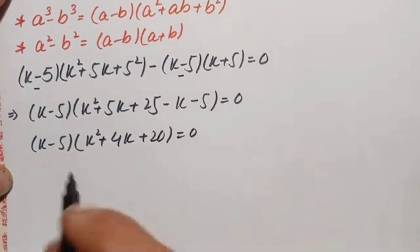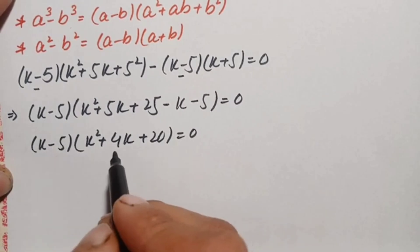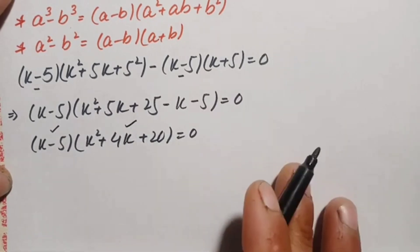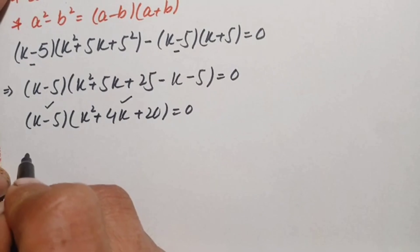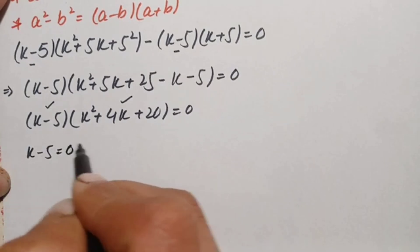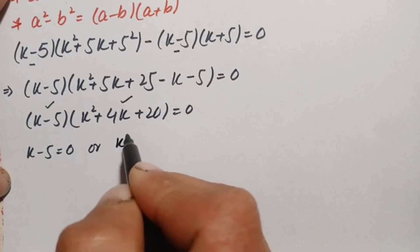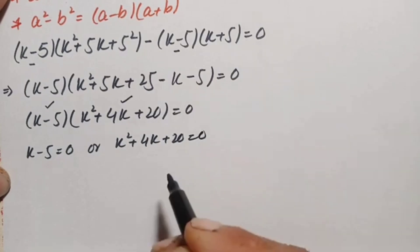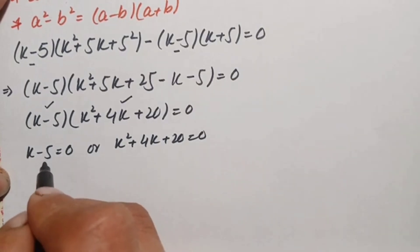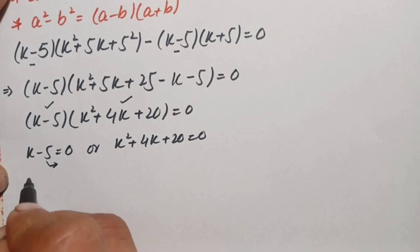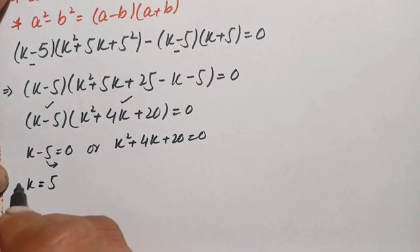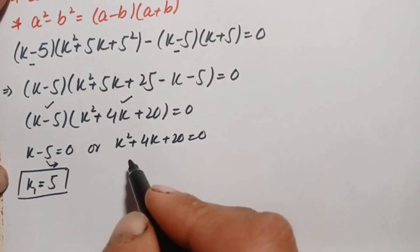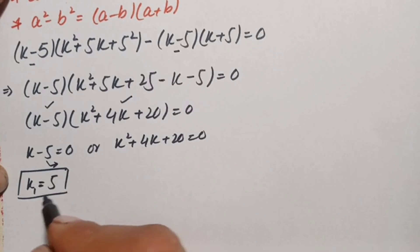Simplifying, this becomes (k minus 5)(k squared plus 4k plus 20) equals zero. Since the product is zero, either k minus 5 equals zero or k squared plus 4k plus 20 equals zero. From the linear equation, k minus 5 equals zero gives k equals 5, which is our first real solution, k1.